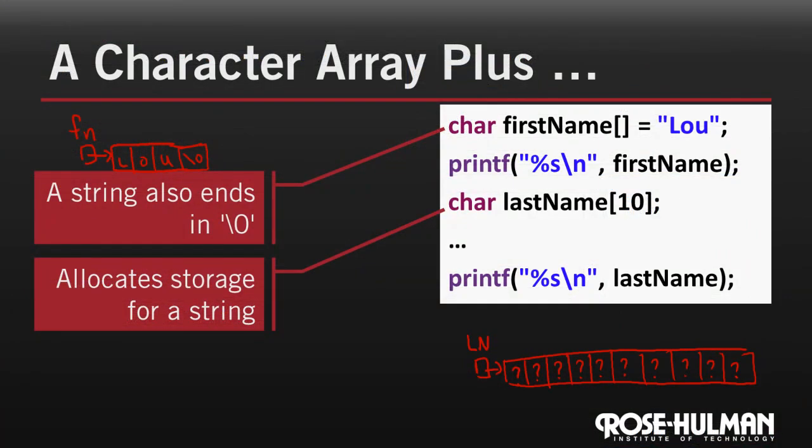Now you might ask, how do we make last name be Gehrig? First, we can initialize it like we did first name, at the point when we declare it. Second, we could assign it character by character, so that we could, one at a time, replace every single character with the ones that we wanted, including the null character, of course. Third, we could use a library function called string copy, and that'll be coming soon.